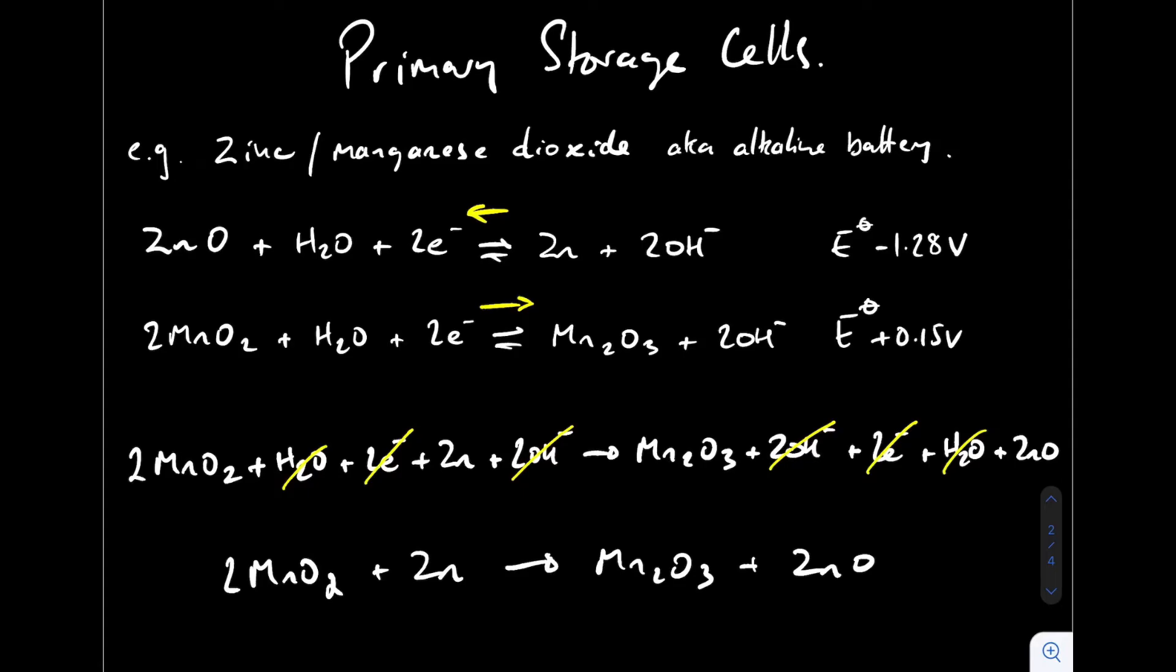If we think about the voltage of this, the E cell, all we need to do is take the more positive standard electrode potential and subtract from that the less positive one. That's coming out with an E cell or a voltage for the cell of 1.43 volts.